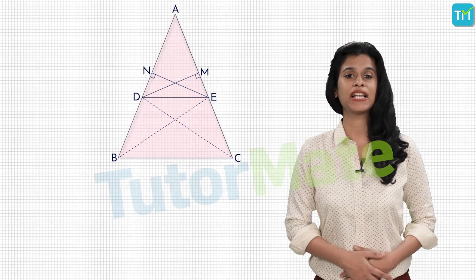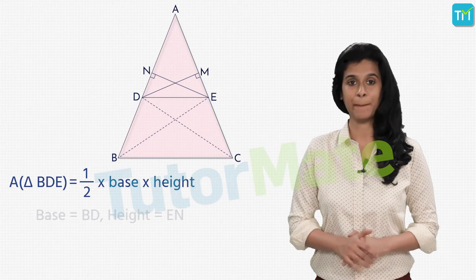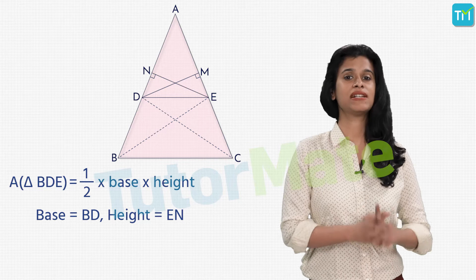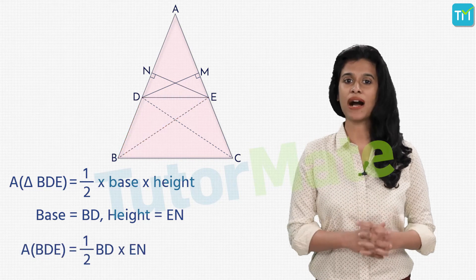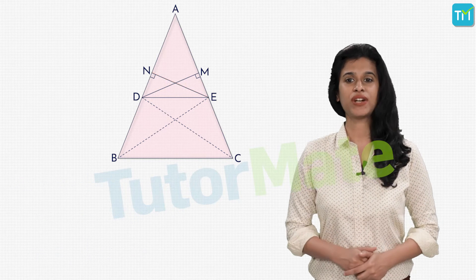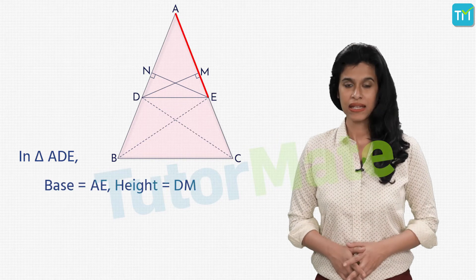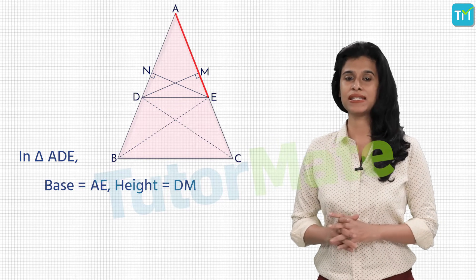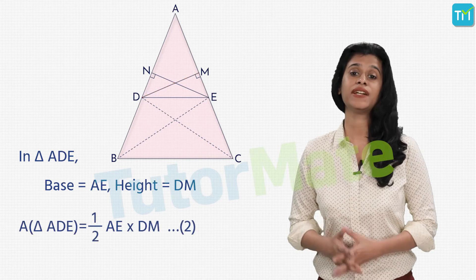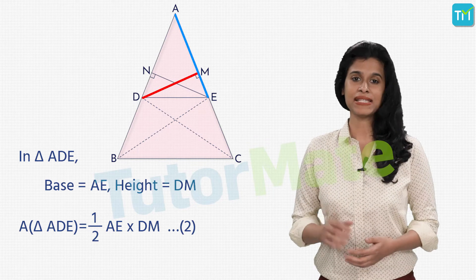Similarly, we can calculate the area of triangle BDE by considering the base as BD and the height as EN. That gives us: area of triangle BDE is equal to half times BD times EN. Now consider triangle ADE again. If we take the base as AE, then the corresponding height is DM, giving us its area as half times AE times DM. We will label this as Statement 2.